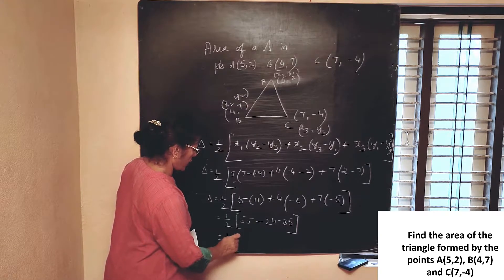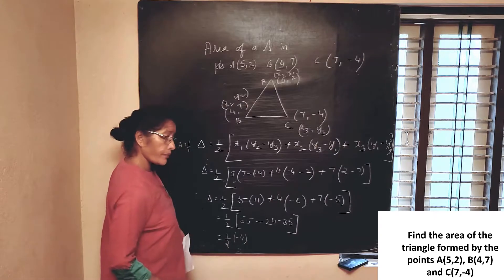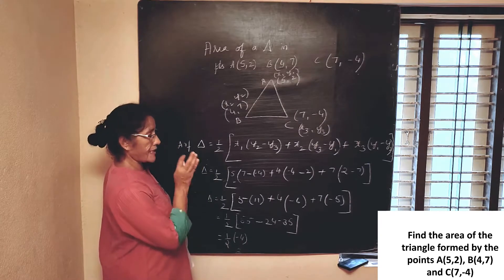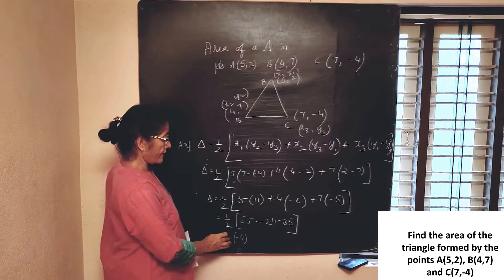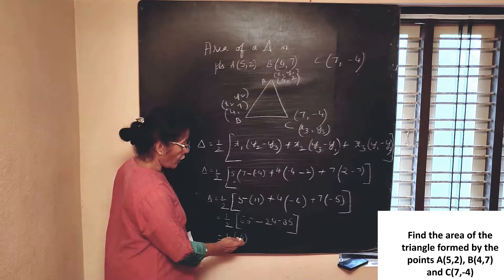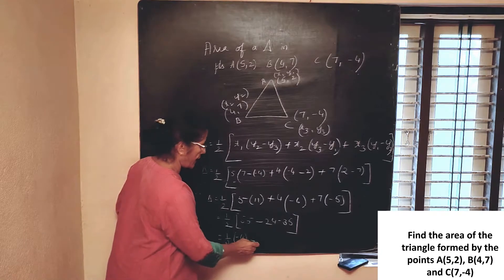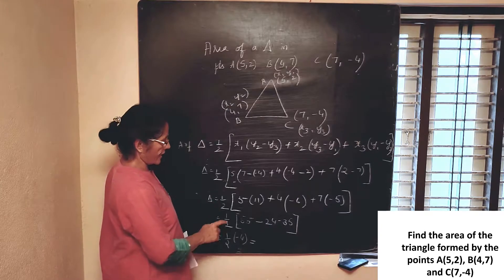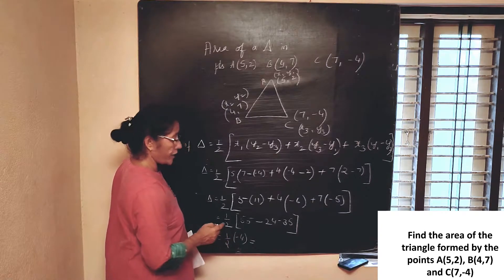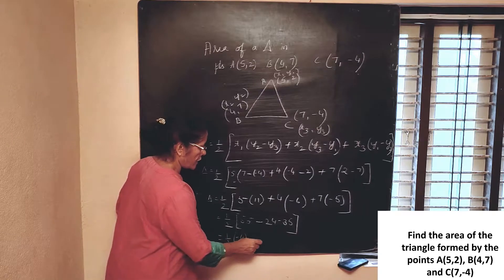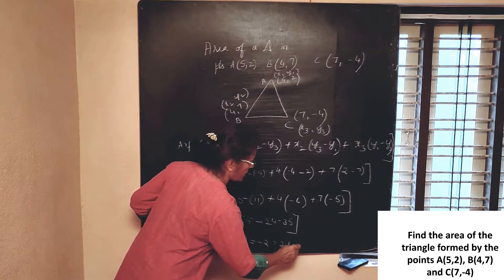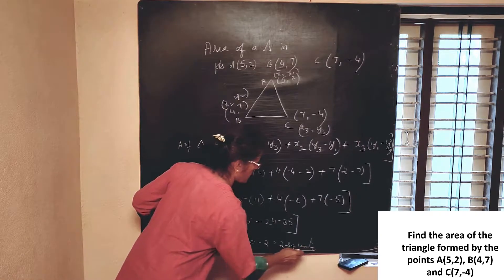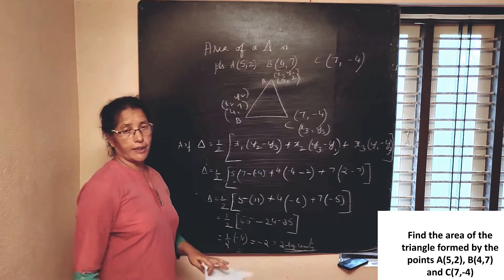So we get half into (55 − 24 − 35) = half into (−4) = −2. It is possible to get a negative area value. But you neglect the negative sign and write down the answer: area of the triangle is equal to 2 square units.